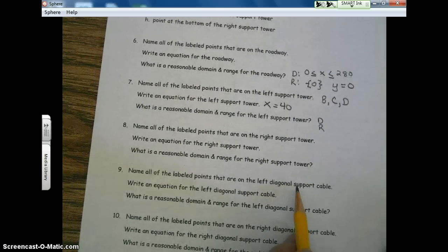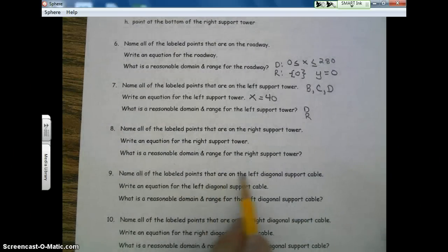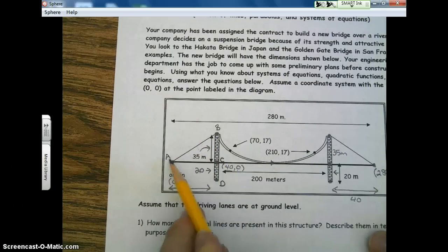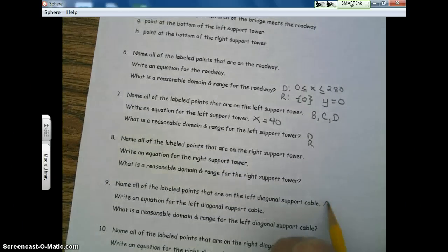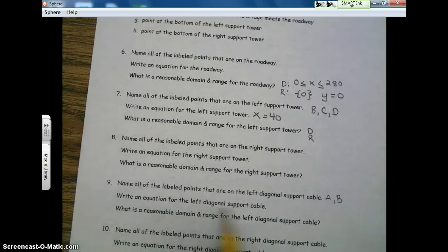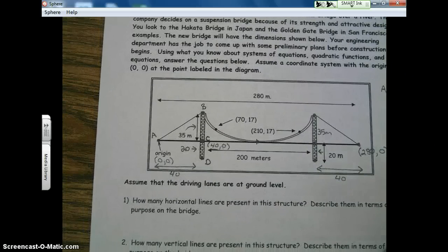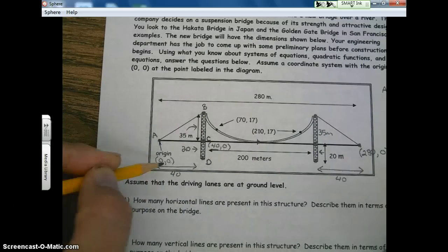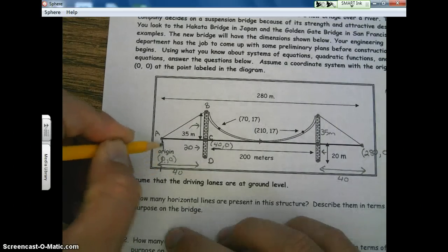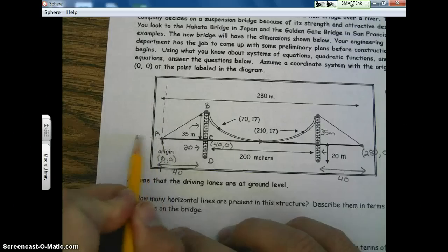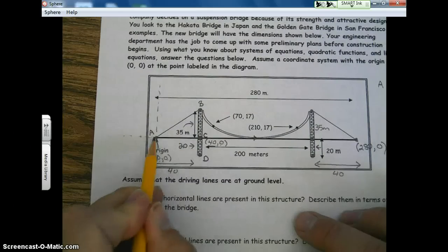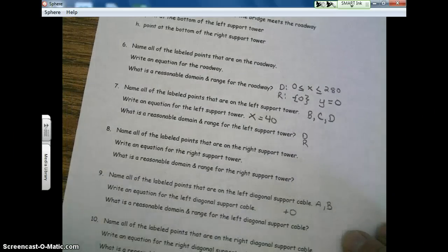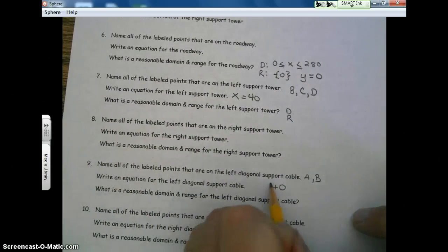And you're going to do your domain and your range for your support tower. Let's take a look at a diagonal now. It says, name all the labeled points that are on the left diagonal support cable. Left diagonal support cable, A, B. Write an equation for the left diagonal support tower. Well, left diagonal support tower. What's the Y-intercept? Well, since this is the origin, that means that the Y-axis would be right here. And this would be our X-axis. So what's the Y-intercept? Zero.